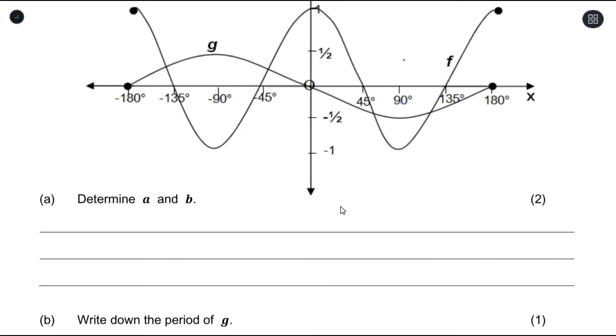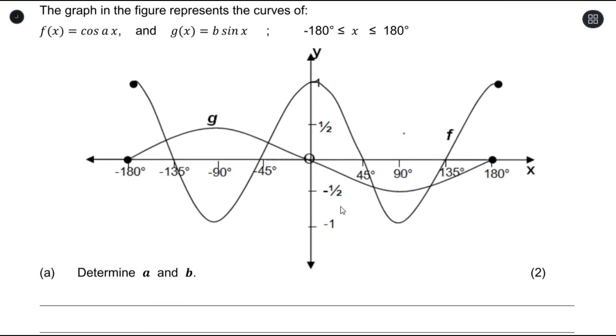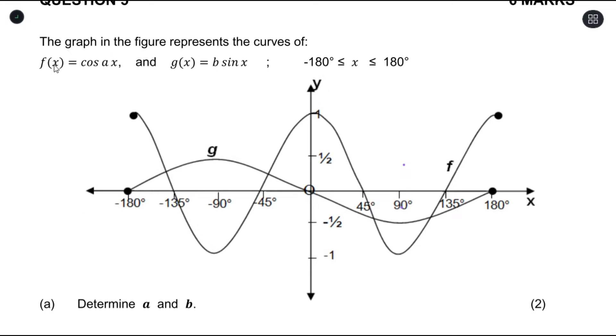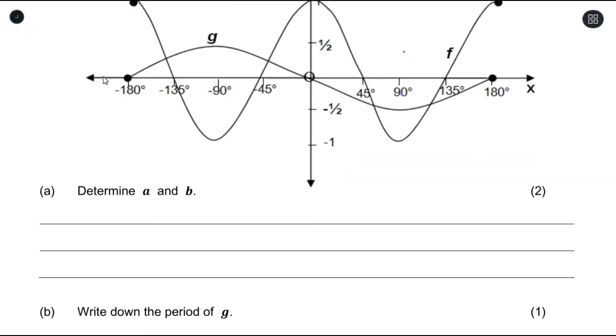The first question (a) says determine a and b. Now this a and b comes from our equation here. So a comes from the cos x graph. The cos x graph is the f graph, so this graph over here. Now whenever you're trying to find your a, this a is in between the cos and the x, you use your period to help you get a.